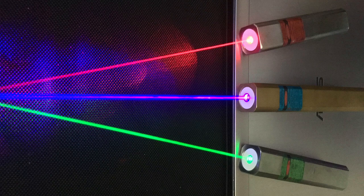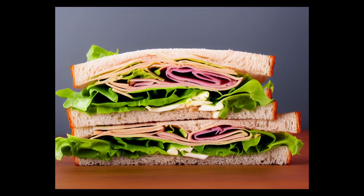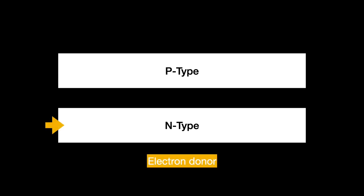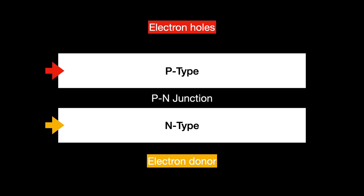GaN's first and biggest industrial use is as a material for optoelectronics — LEDs, lasers, displays, and the like. Roughly speaking, an LED is made up of a sandwich of two materials sitting on a substrate. One layer is doped to donate electrons, called the n-type layer. The other is doped to accept those electrons, called the p-type layer. Where the two layers meet, you have a p-n junction. Apply an electric field to the junction and the electrons and electron holes recombine, creating light.